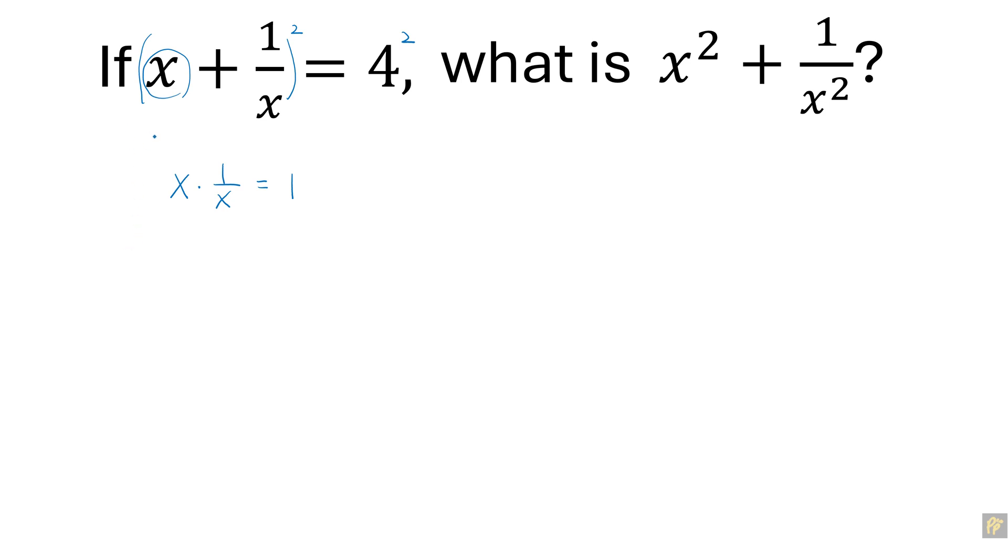On the left-hand side, to square them, we have x squared plus 2 times x times 1 over x plus 1 over x squared. This should be equal to the right-hand side, which is 16.